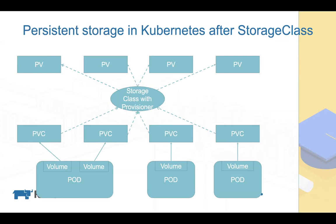Those new PVs will exactly match the PVC spec. For example, if you ask for one gigabyte based on SSD, the provisioner will provision exactly that. You get a strictly matched spec between PV and PVC and you don't need the storage admin manually involved in any volume creation. After the PV is created automatically, the PVC binds with it and the pod can start using the volume.